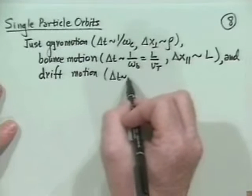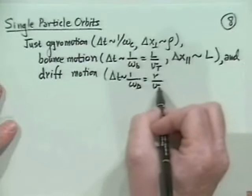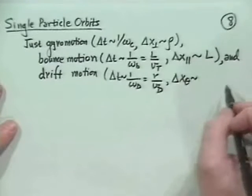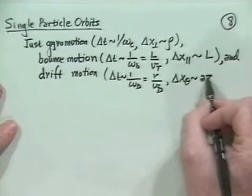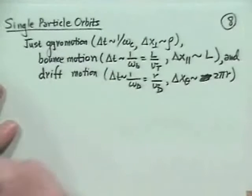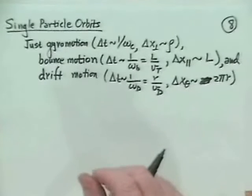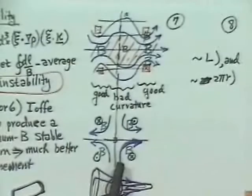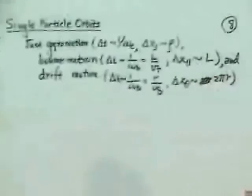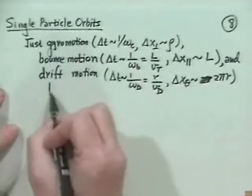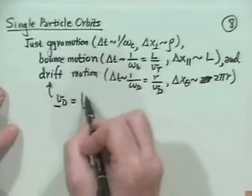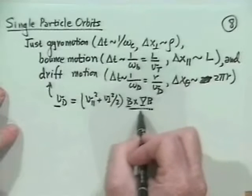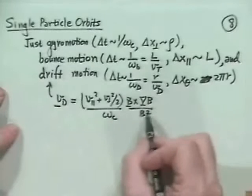The slowest timescale is the so-called drift motion, where Delta T is of order one over the drift frequency, which is the radius over the drift velocity. The particle drifts azimuthally, of order 2π r, all the way around. There's a complication because the Ioffe bar configuration is not quite axisymmetric — we added the cusp field, making it inhomogeneous in the azimuthal direction. The drift velocity is V_parallel² plus V_perp²/2, times V cross (B cross grad B) over B² and over the cyclotron frequency.